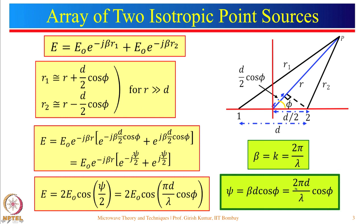The remaining bracket can be written in the form of cos(ψ/2), since e^(−jx) + e^(jx) divided by 2 gives the cosine term — that is why the factor of 2 appears. This is the expression for the field at a far-away point due to the 2 elements, both fed with equal amplitude, equal phase, and both being isotropic point sources.